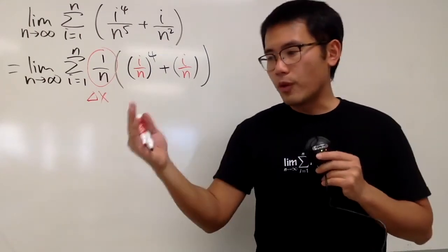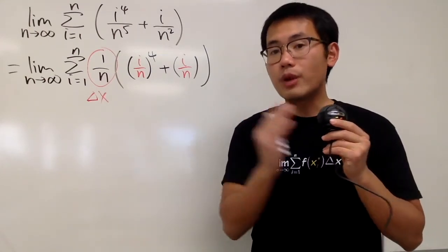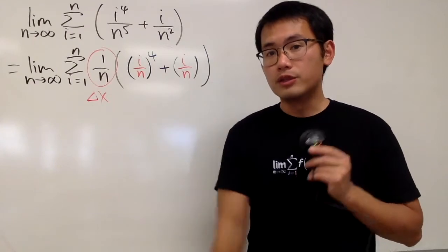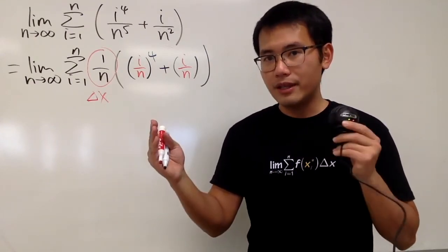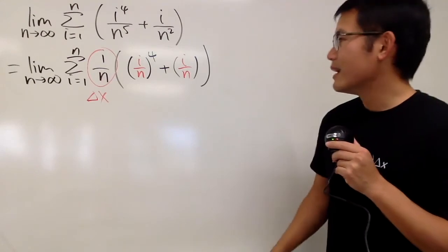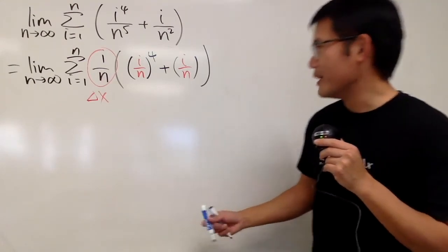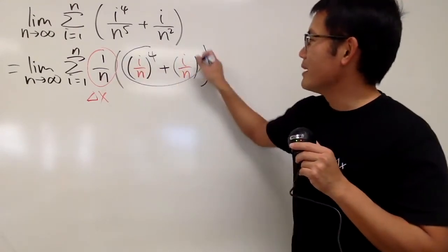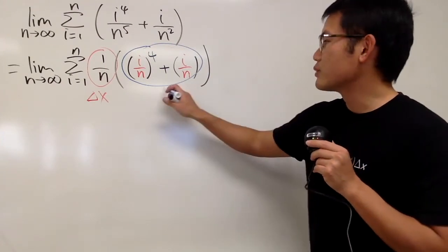And the 1 tells us when you go from one number to the other, the length has to be 1. So you can go from 0 to 1, you can go from 17 to 18, etc. But you don't have to be too crazy. You should also be paying attention to this part, because this right here is the function part.